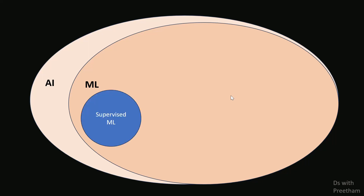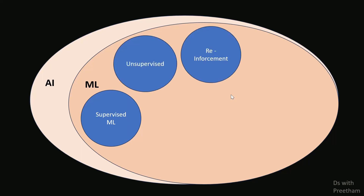Now, machine learning has three types: supervised machine learning, unsupervised machine learning, and reinforcement learning. There are three types.